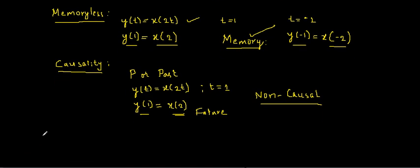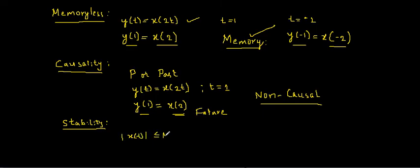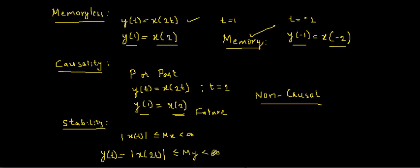Finally, I consider stability. A system is BIBO stable — bounded input bounded output stable — if a bounded input produces a bounded output. If I make the input finite, the output should also be finite. Considering |x(t)| ≤ Mx < ∞, the output |y(t)| = |x(2t)| is also a finite number less than infinity. Hence the given system is stable.